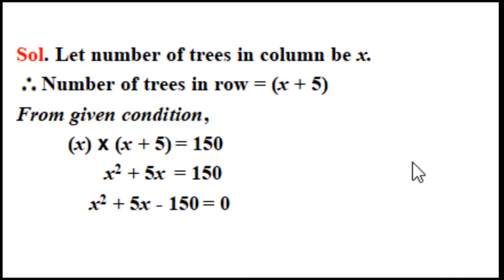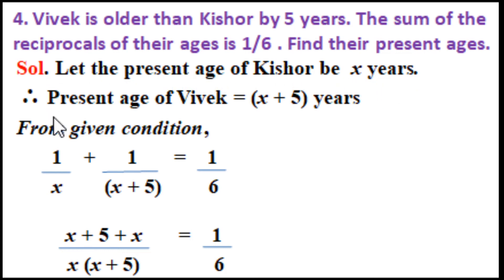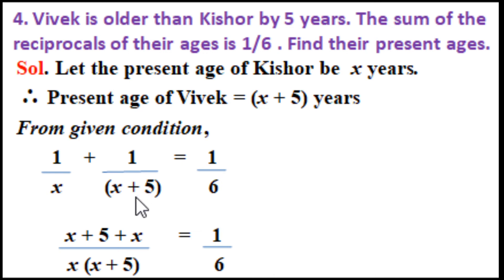Problem 4: Vivek is older than Kishore by 5 years. The sum of the reciprocals of their ages is one-sixth. Find their present ages. Let the present age of Kishore be x years, therefore present age of Vivek is x plus 5. From the given condition: 1/x plus 1/(x plus 5) equals 1/6.